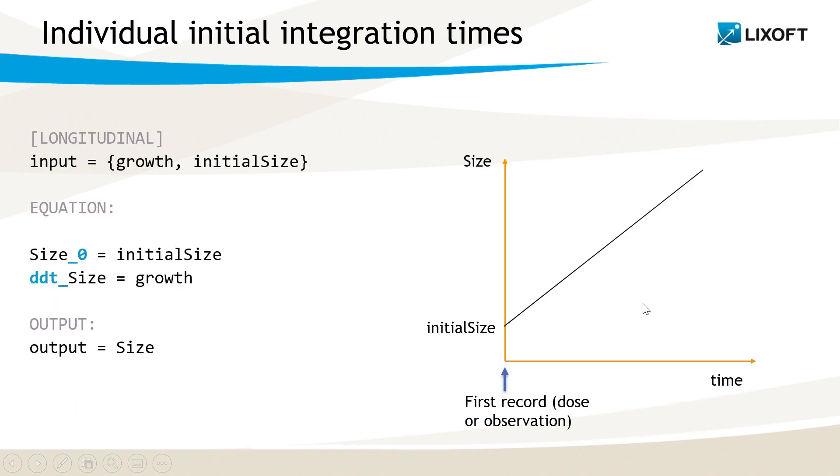It is also possible to leave the initial integration time unspecified in the MLXtran model, like here. In this case, the initial time is the time of the first record in the data for each individual, which means that each individual can have a different initial integration time.